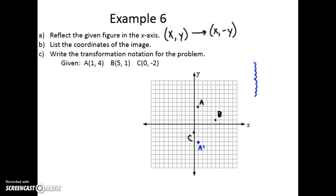For b, I count 1 unit to the x-axis, then another 1 unit, and that gives me b prime. For c, I count up 2, then another 2, and that gives me c prime. My original shape reflects over the x-axis — it's like folding the graph on the x-axis.